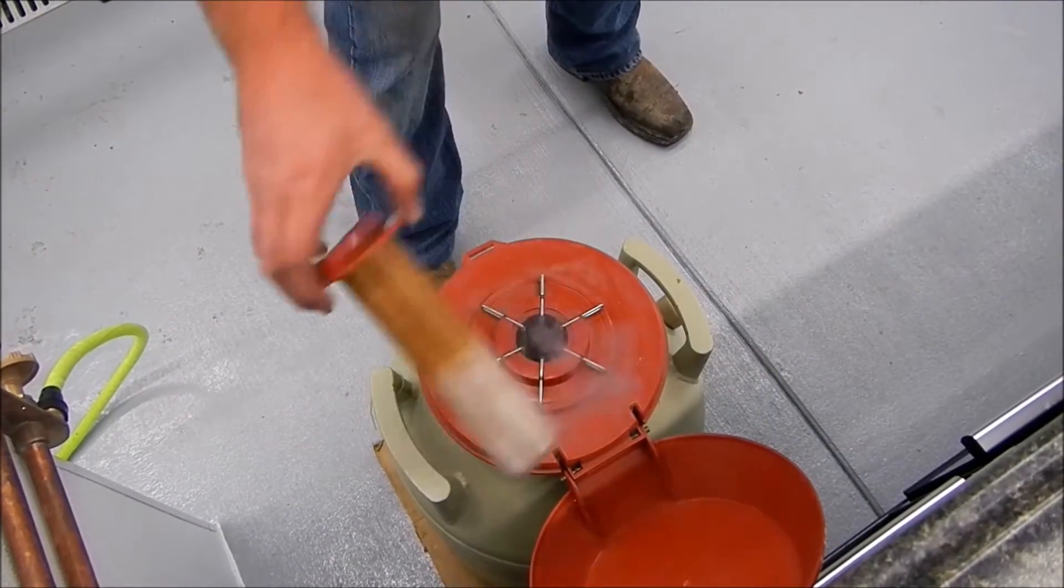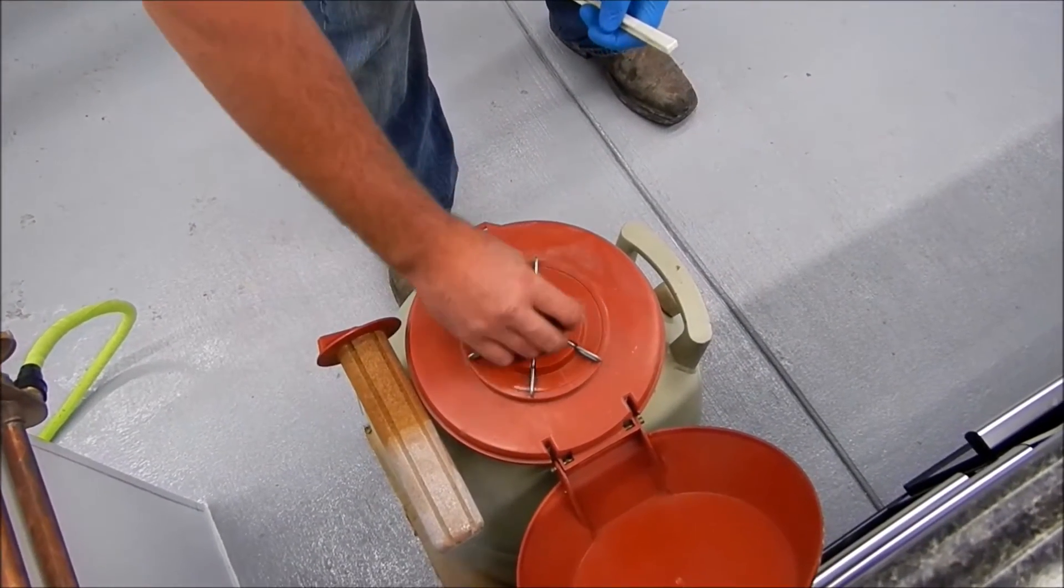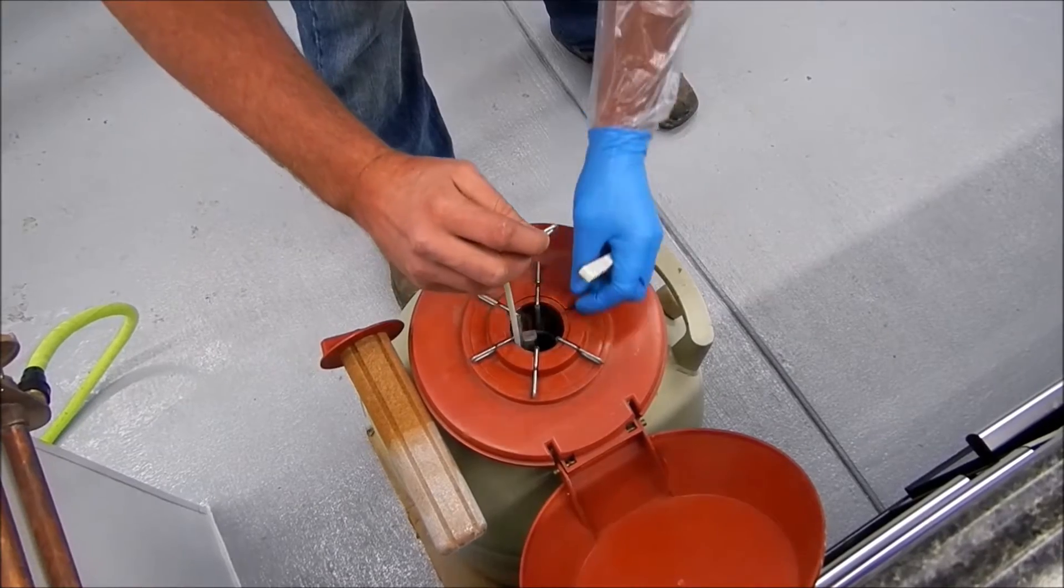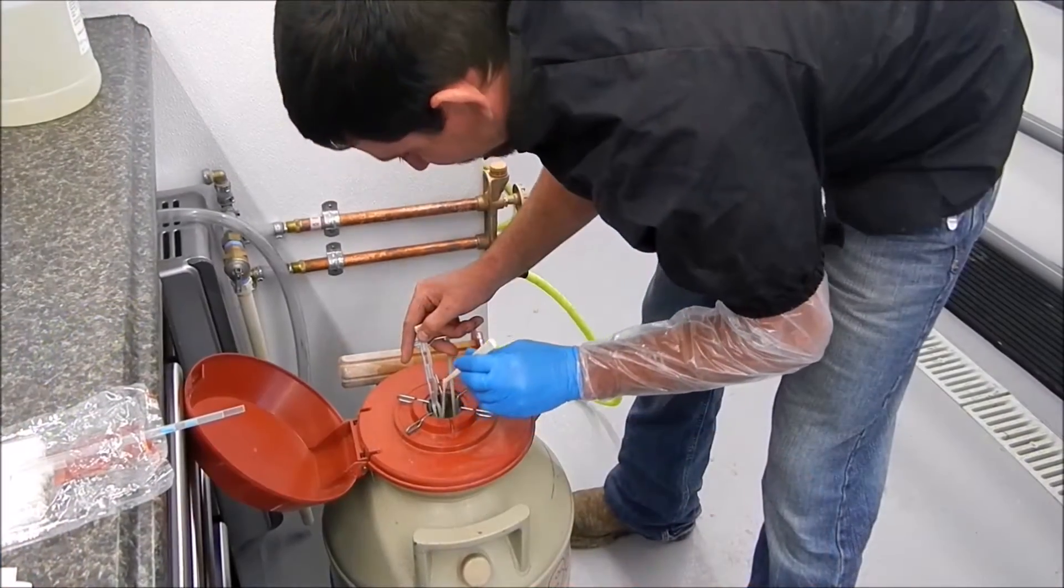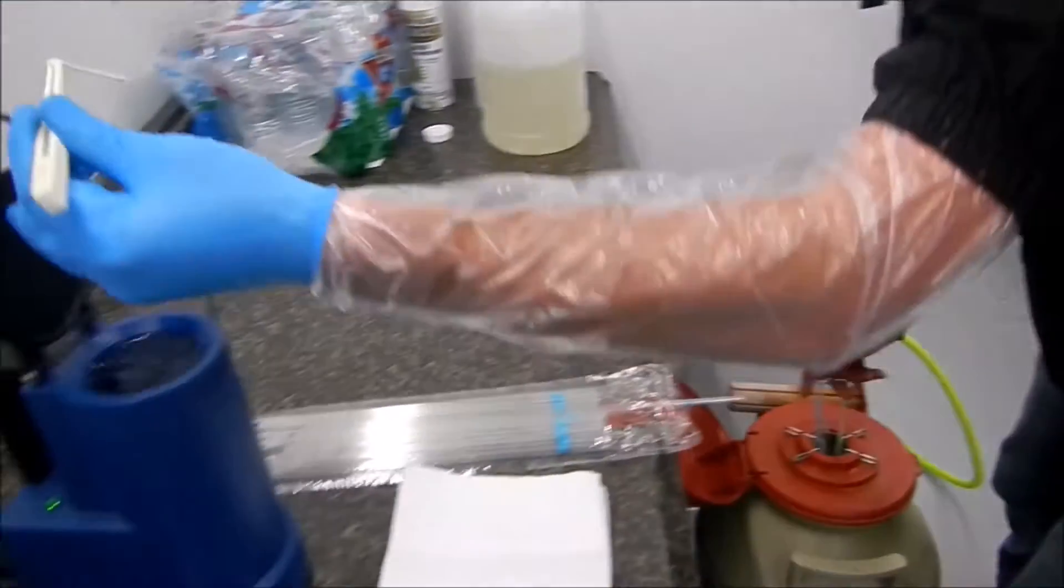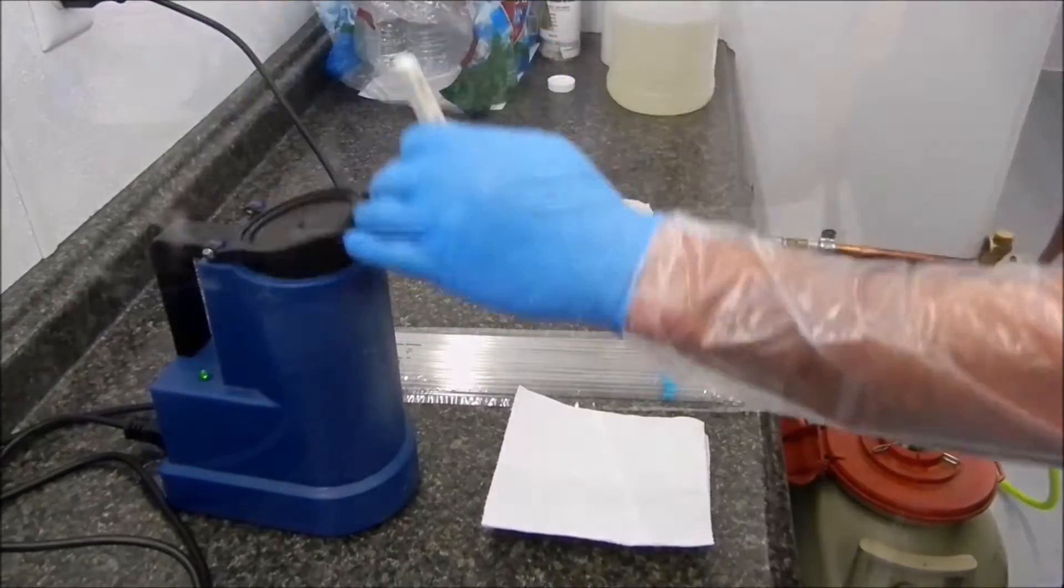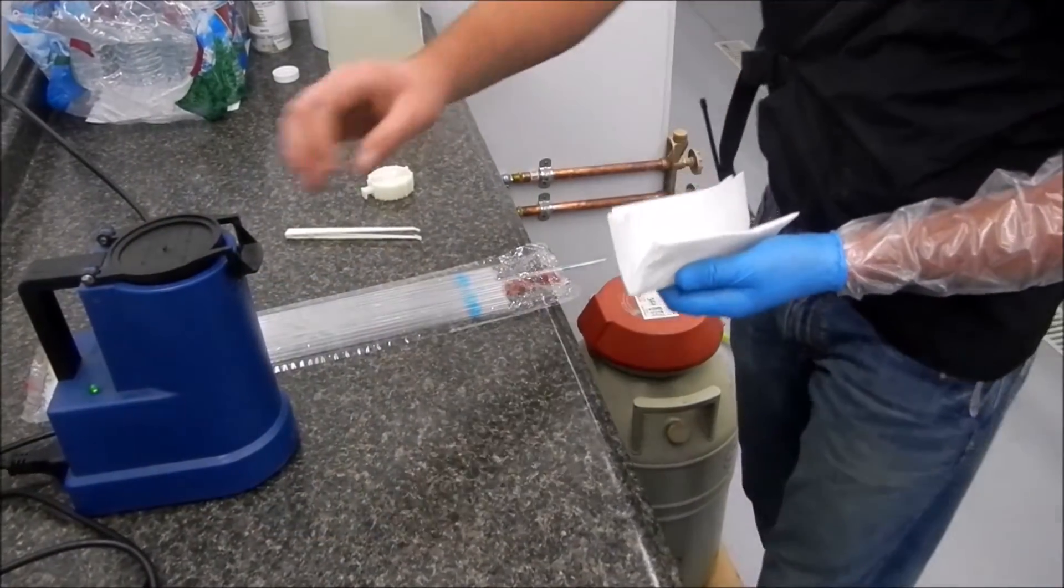The first step in an AI procedure is to remove the semen straw from the liquid nitrogen tank. This must be done quickly and then inserted into the water bath, which is set at 96 degrees. At this point, we'll thaw the semen for approximately 30 to 45 seconds.